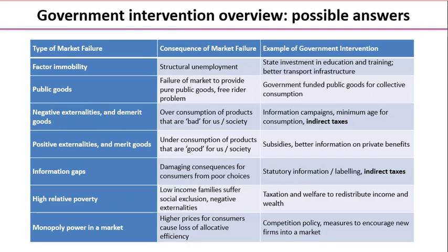We'll come back in a few videos to exactly how indirect taxes work there. Next are positive externalities and merit goods. These are goods that are good for us, and if they have positive externalities they're also good for other people and third parties. In a free market we tend to under-consume those products, so here we might look at subsidies to make them cheaper and generally providing better information in the hopes that people will consume a little bit more.